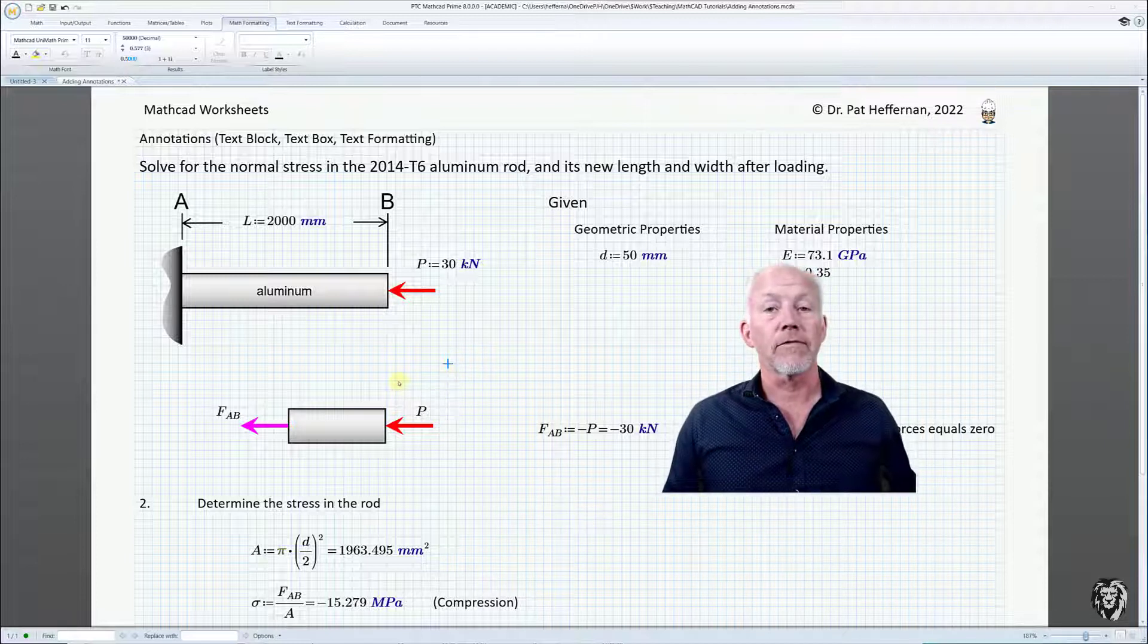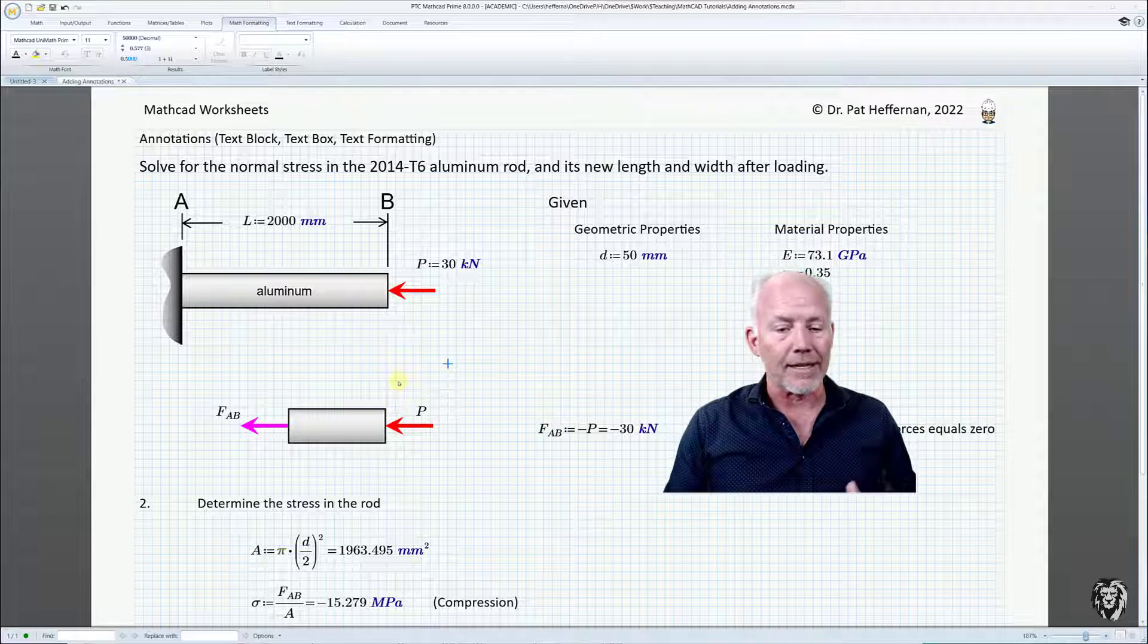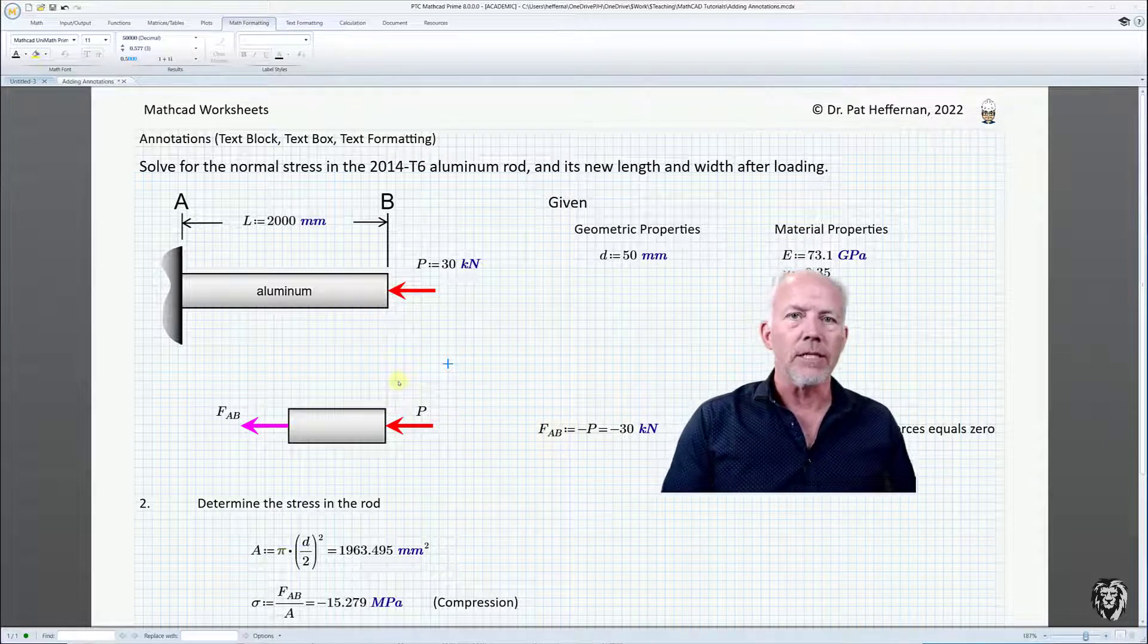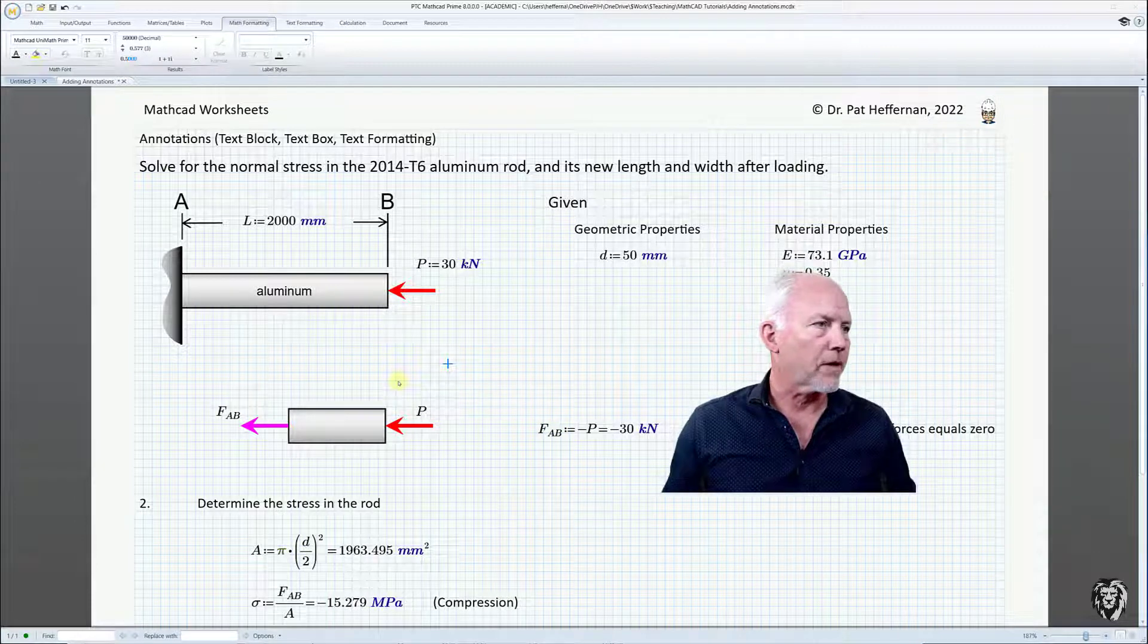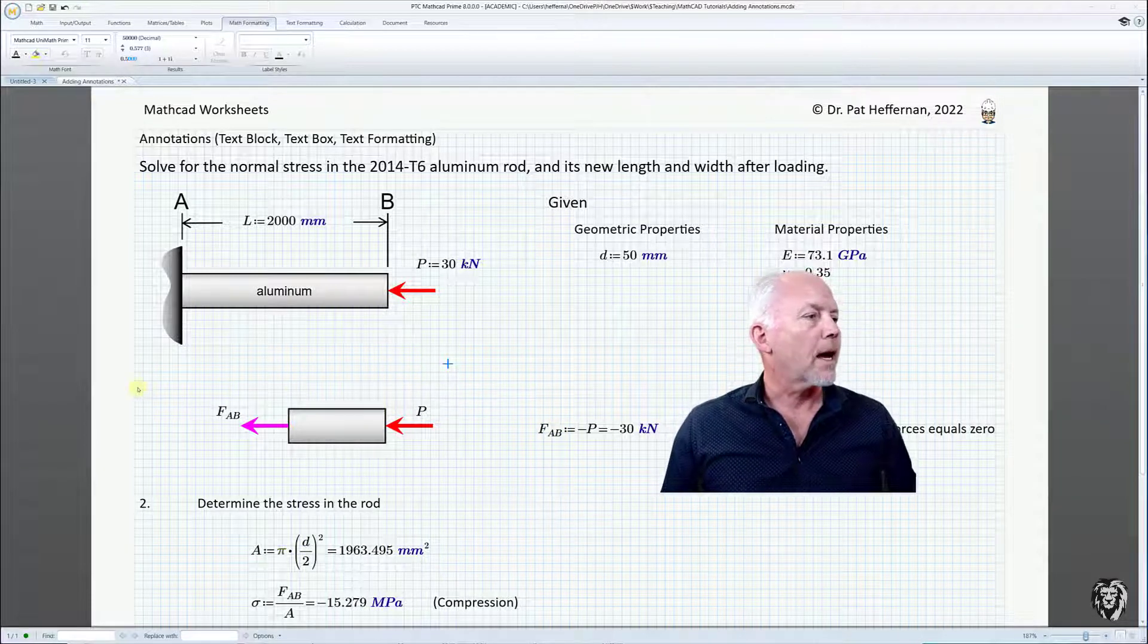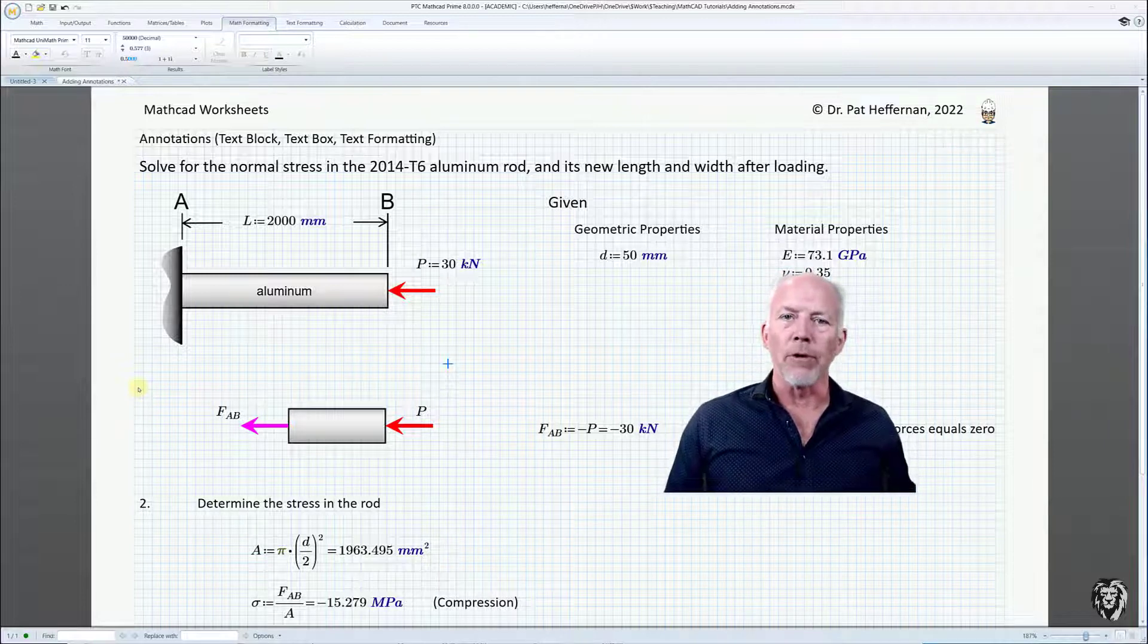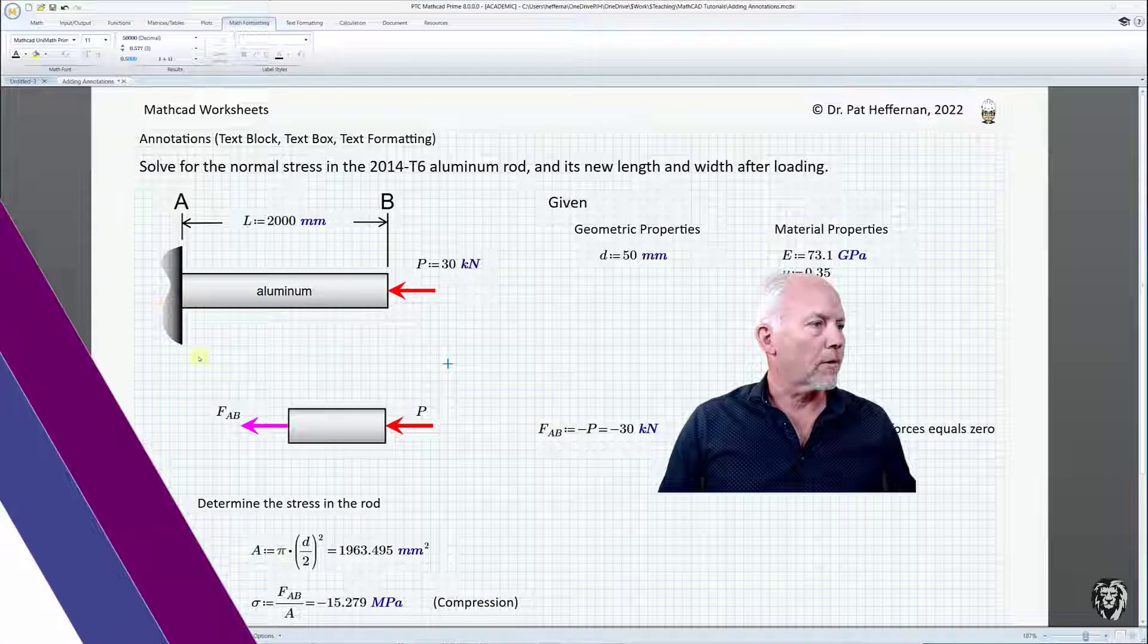So there are a couple different ways that MathCad can annotate things. Obviously we're using images and I'll talk separately about inserting images into our document and it works really well to do that. But let's add some textual annotations so that we know what we're doing and can present that along with it.